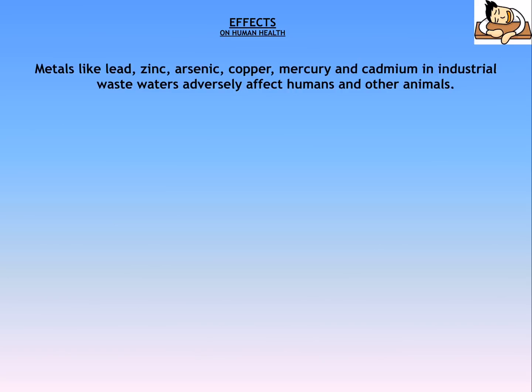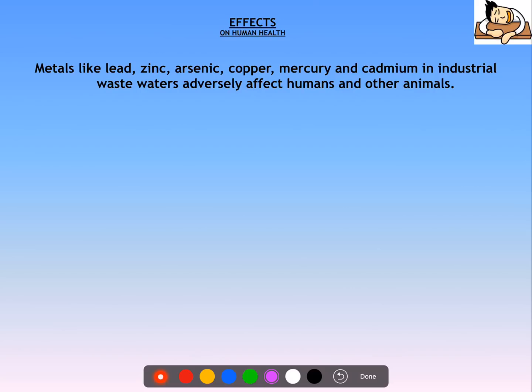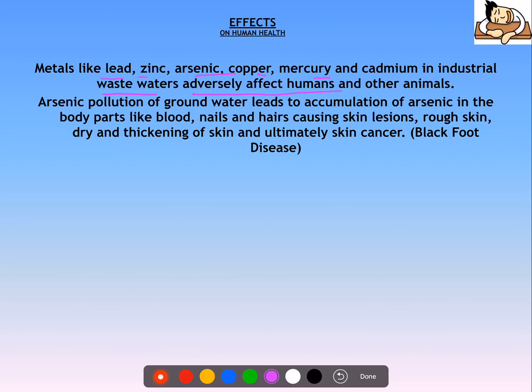Looking at effects on human health — metals like lead, zinc, arsenic, copper, mercury, and cadmium in industrial wastewater adversely affect humans and other animals. Arsenic pollution leads to accumulation of arsenic in body parts like blood, nails, and hair, causing skin lesions, rough skin, dry and thickening of skin, and ultimately skin cancer — also called blackfoot disease due to discoloration.